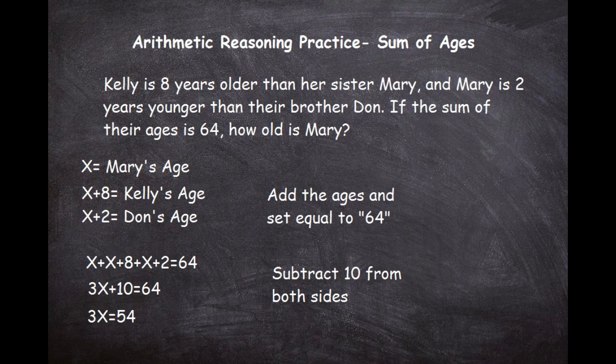Now all we have to do to get the value for x is divide by 3 on both sides. When we divide 3x by 3 we get x, and when we divide 54 by 3 we get 18. So x equals 18 — and since x is Mary's age, we know Mary is 18 years old.